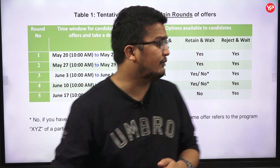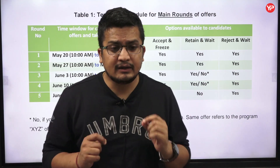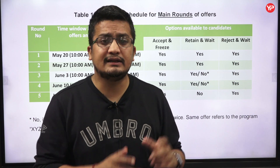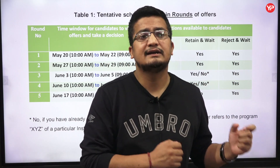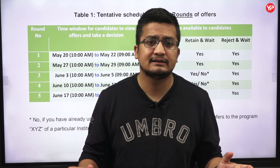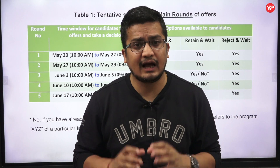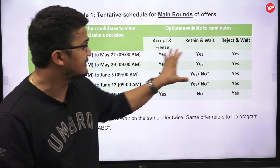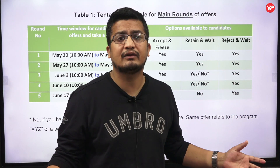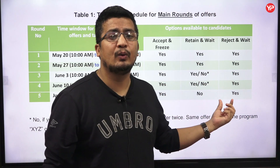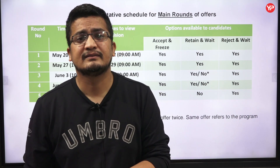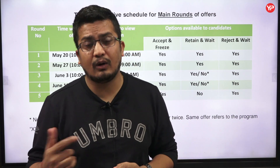Round 4 offers will be released as per the date mentioned, likewise Round 5. The crux of the story is: play safe and take guidance from your mentors about your first round, second round, and third round situations before deciding how to proceed. Do not take any unnecessary steps or risks. Analyze the circumstances — Accept and Freeze you can do any time for all 5 rounds, Reject and Wait you can do any time for all 5 rounds, but Retain and Wait has some subjective NOs. Clearly in the 5th round there is NO for Retain and Wait because Round 5 is the decisive round — either you need to accept or reject.